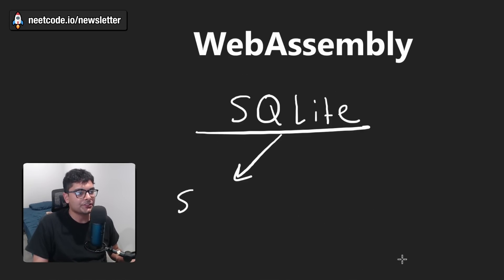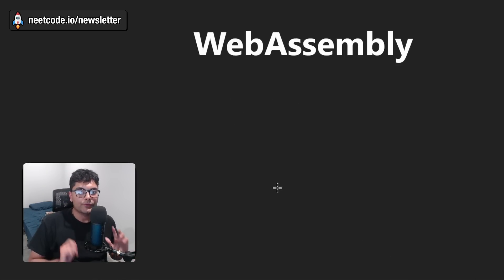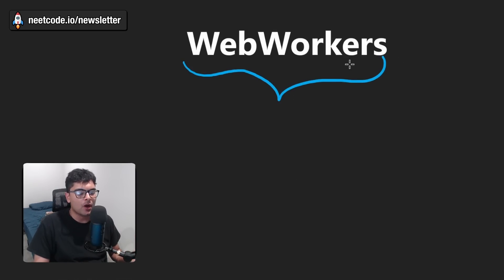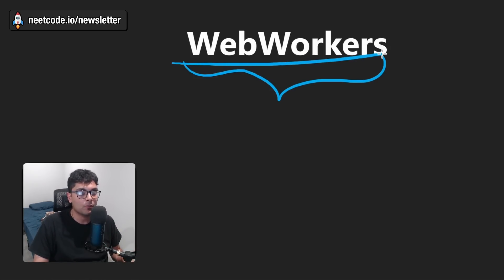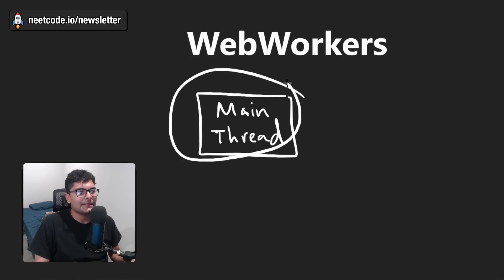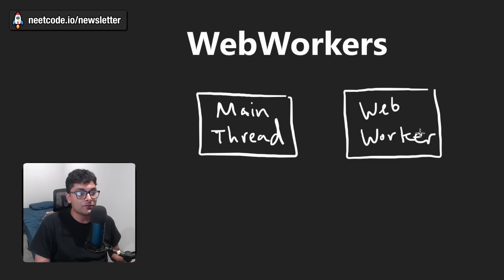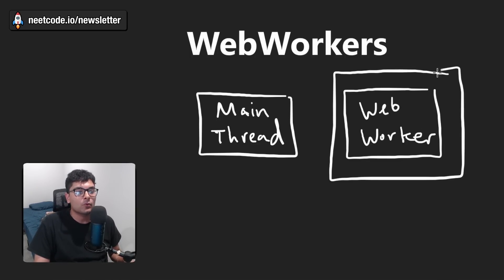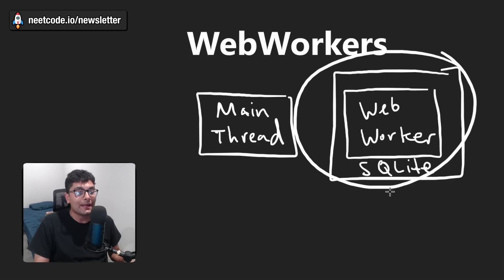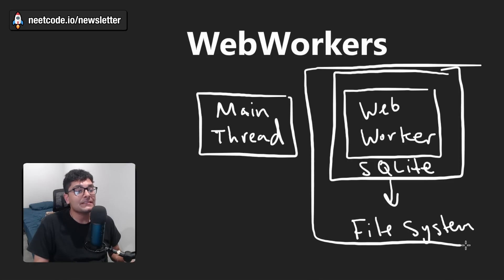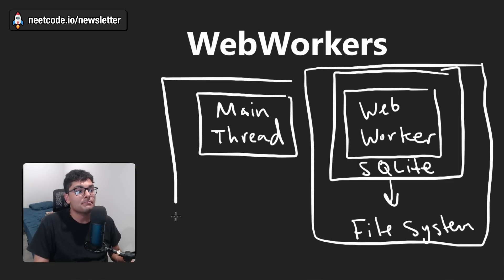All of this is accomplished with something called web workers. I'm going to take a couple of seconds to draw this visually, and then we're actually going to get into the code. Imagine you have a main thread — the JavaScript main thread. We can also spin up a new web worker, which will actually run JavaScript code within a separate thread. And within that web worker, that's where we're going to run the SQLite operations. We can use this to write to our file system, and this can probably be done in parallel as the main thread is running.